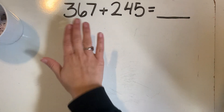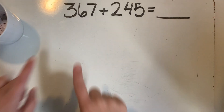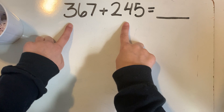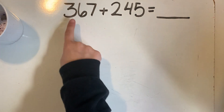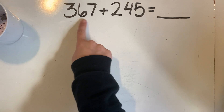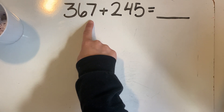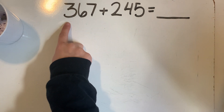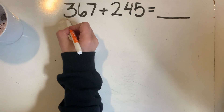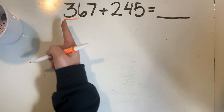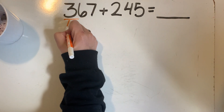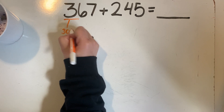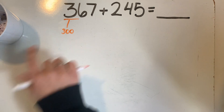Our first step when we're adding three-digit numbers is to break each one of the addends apart by place value. I'm going to start here with this first addend, which is 367. I'm going to start with the hundreds place. The three in the hundreds place is telling me that there are three groups of 100, so three groups of 100 is 300. In my hundreds place, I have 300.